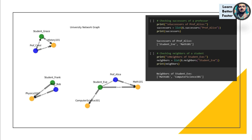We also talked about successors, which is another concept. To go over simply what that is in the code: if you run this code and say give me the successors of Alice, what you'll see is these two successors. These are basically one degree separated — Professor Alice has these two successors: Eve and Math 101.